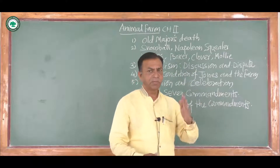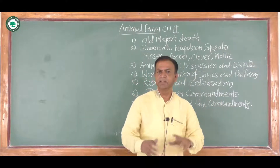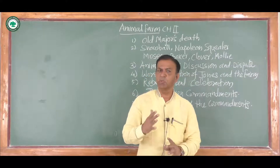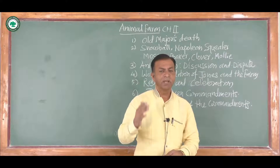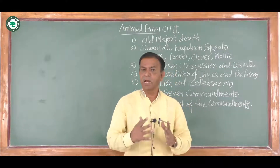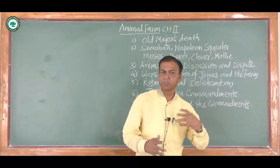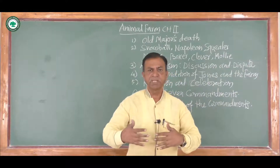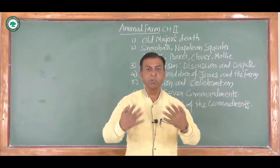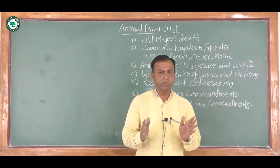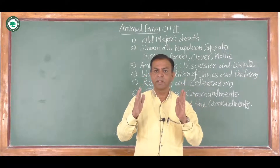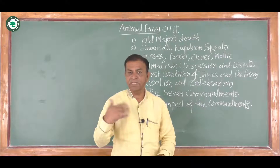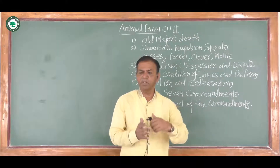At the end of chapter one we studied how Old Major inspired the animals to make a revolution against human beings, and how the human being is the cruel one and the root cause of their unhappiness. We also studied about the 'Beast of England, Beast of Ireland' poem and how through this poem he gives the message to revolt against human beings. He also told his ideas and thoughts regarding socialism.